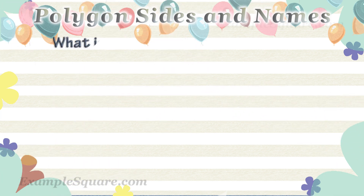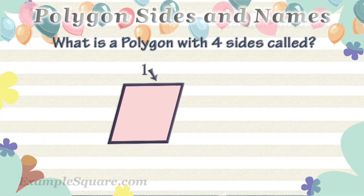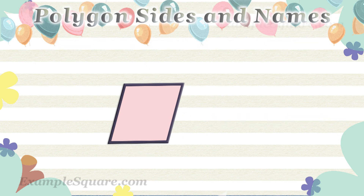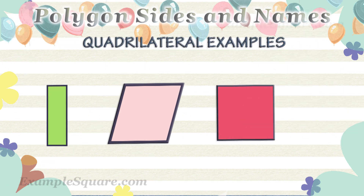What is a polygon with four sides called? A polygon with four sides is called a quadrilateral. These are some examples of quadrilaterals.